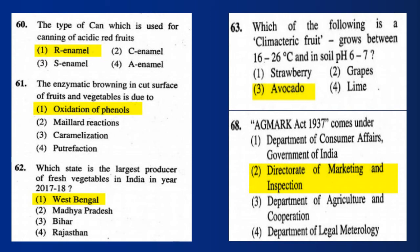Question 62: Which state is the largest producer of fresh vegetables in India in 2017-18? Answer: West Bengal. Question 63: Which of the following is a climacteric fruit that grows between 60 and 26 degrees Celsius in soil with pH 6 to 7? Answer: Avocado. Question 68: The Agmark Act 1937 comes under the Directorate of Marketing and Inspection.